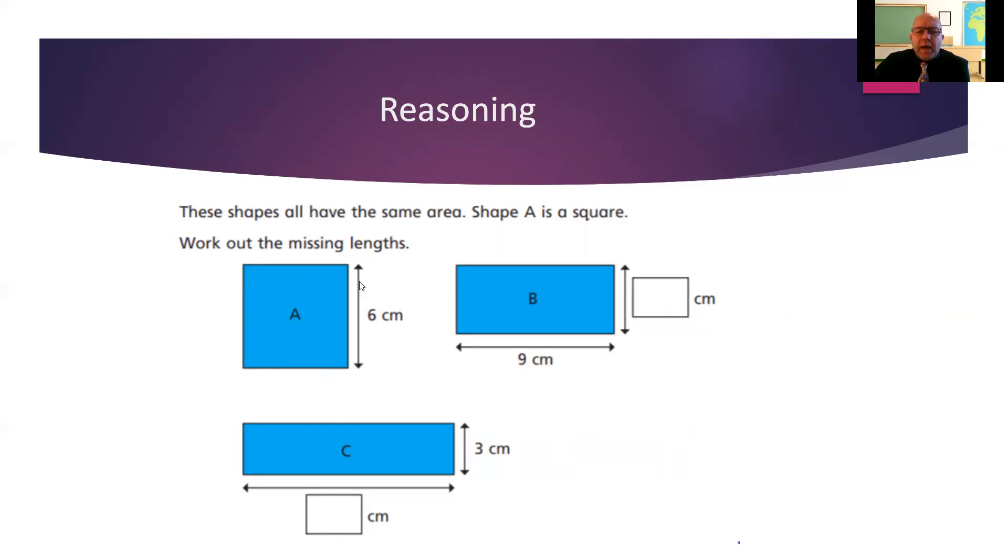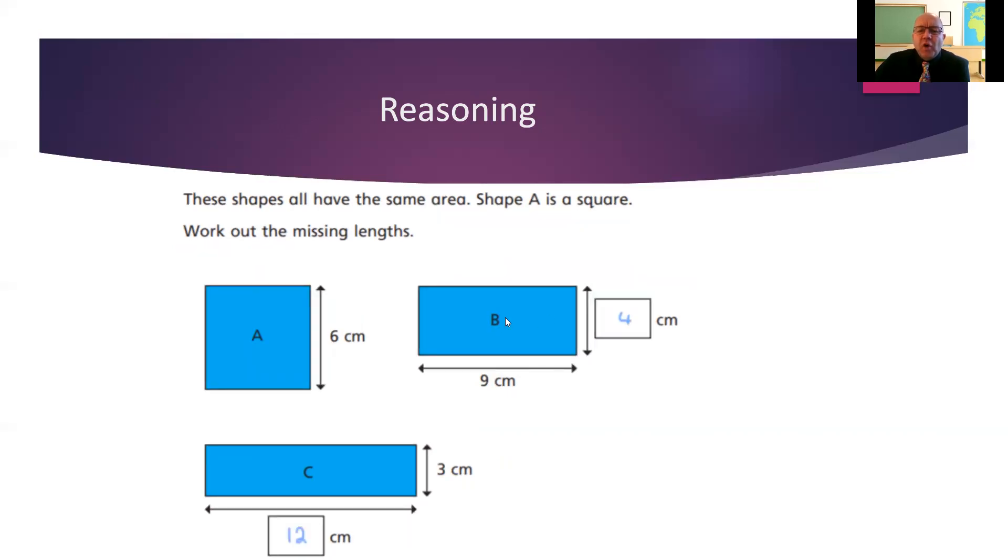Let's take a look. Well, if this square is 6 centimetres long and 6 centimetres wide, to find the area, we multiply the length and the width. So we're going to do 6 multiplied by 6, which is 36. For this one, we know it's got the same area because it says so in the question. So the area is 36. What do we have to multiply 9 by to get 36? That's the answer that should be here. So we can see 9 multiplied by 4 will give us 36. And finally, for C, 3 multiplied by something is 36. Our missing number there is 12.